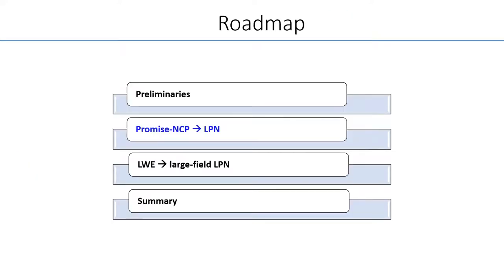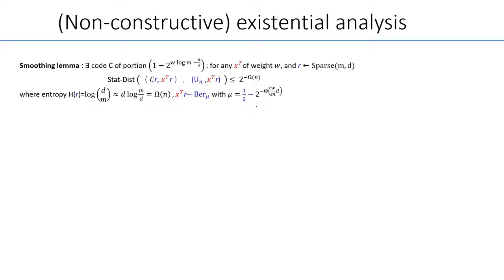Now we introduce our work on how to get tighter reductions for smoothing lemma, and better results for LPN. We would start with a probabilistic analysis, and give a non-constructive form of smoothing lemma. That is, there exists at least a certain fraction of the code, that for any error vector of weight W, and sparse distribution R, CR is statistically close to uniform, even given the noise X·R. The proof follows three steps.